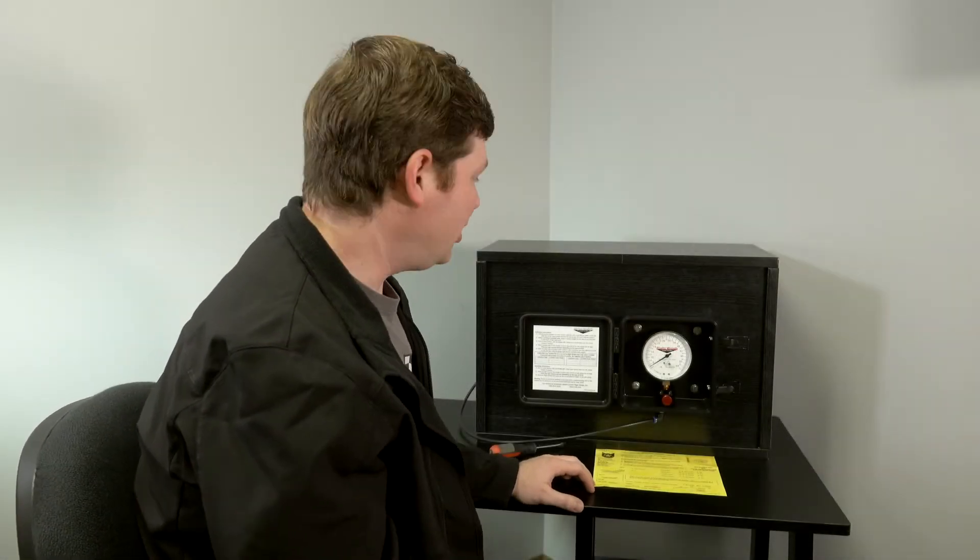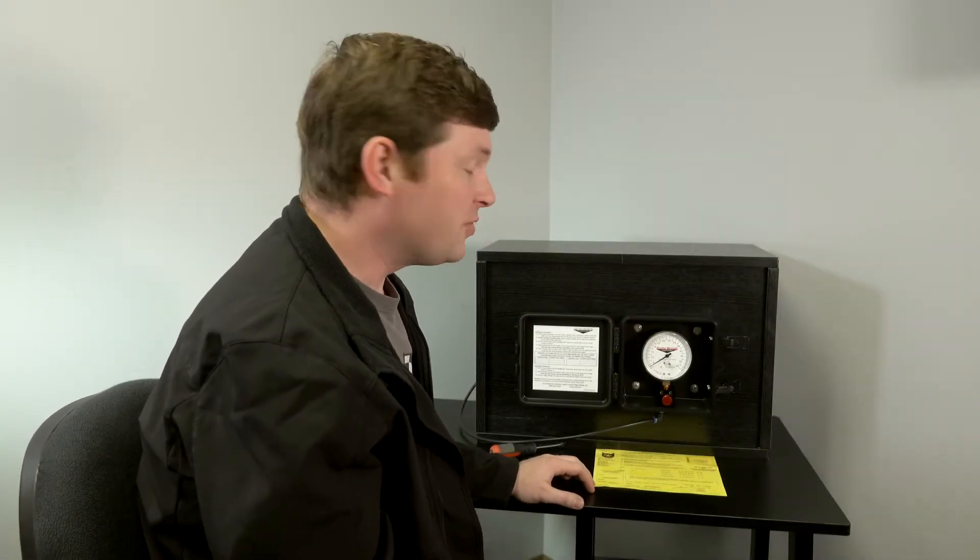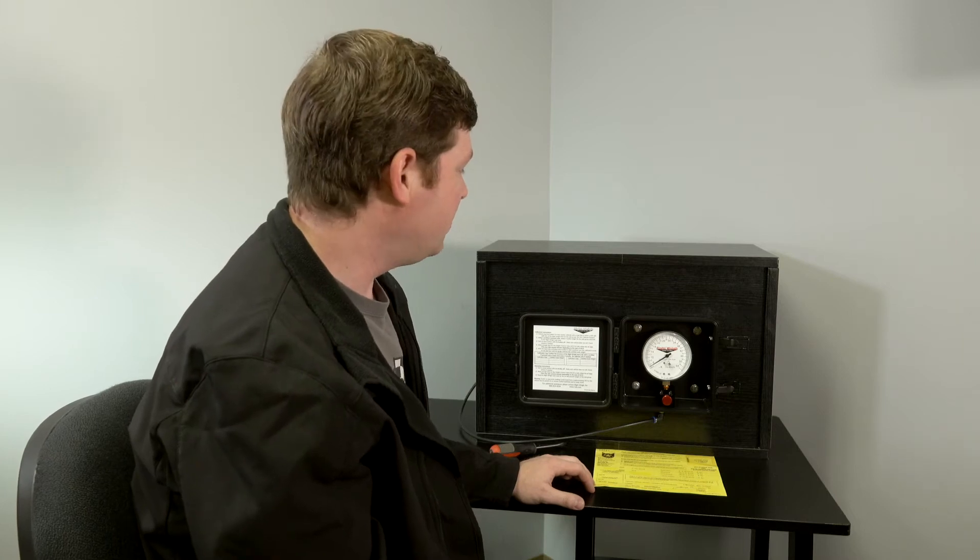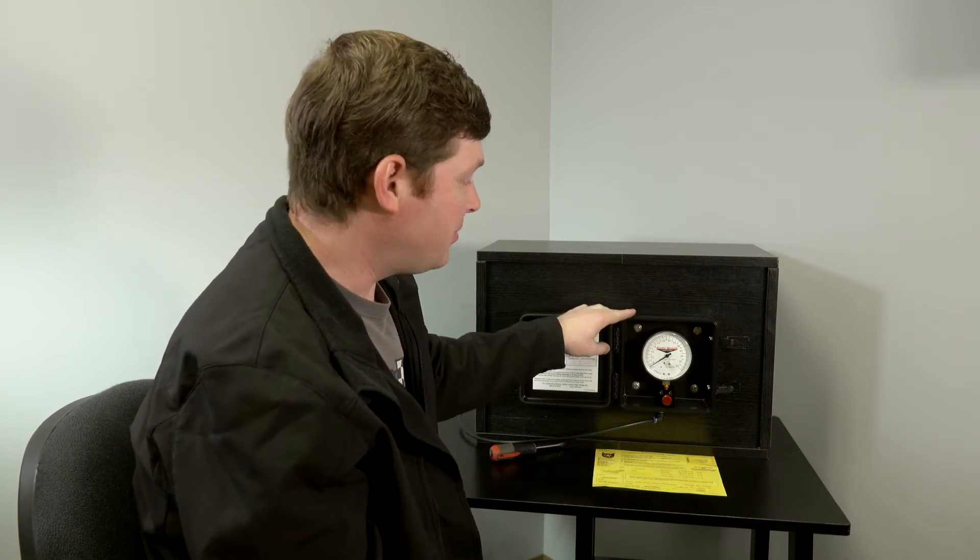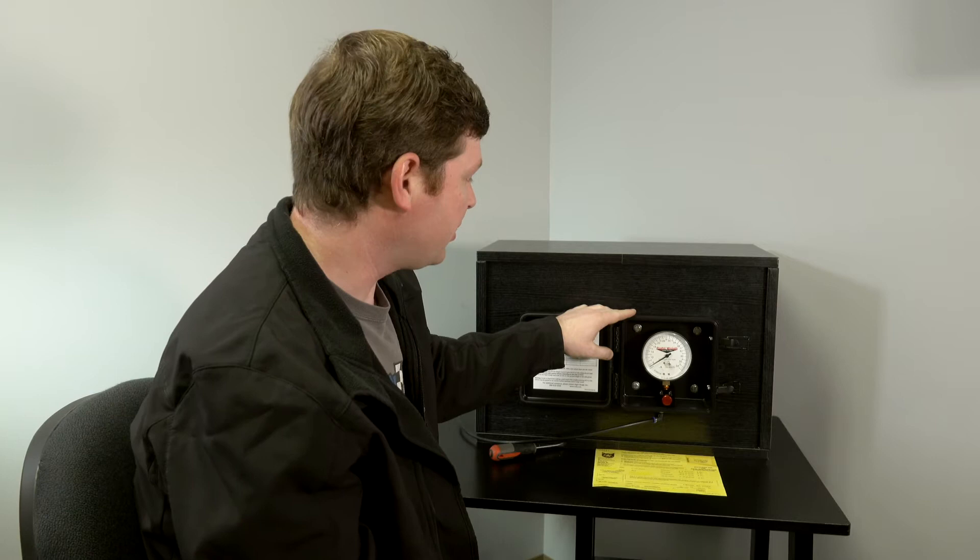I'm going to walk you through how to calibrate the 31054 load scale. This is for a tandem axle. We have them for single and triaxle, but this is for tandem.